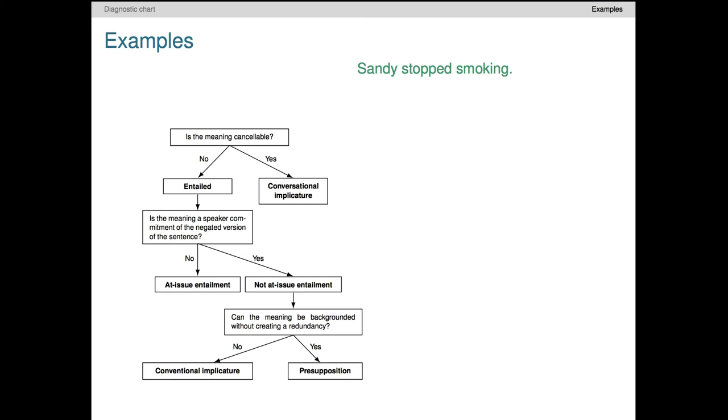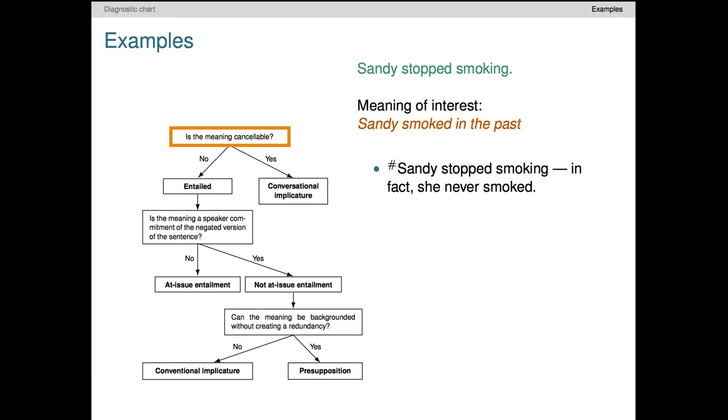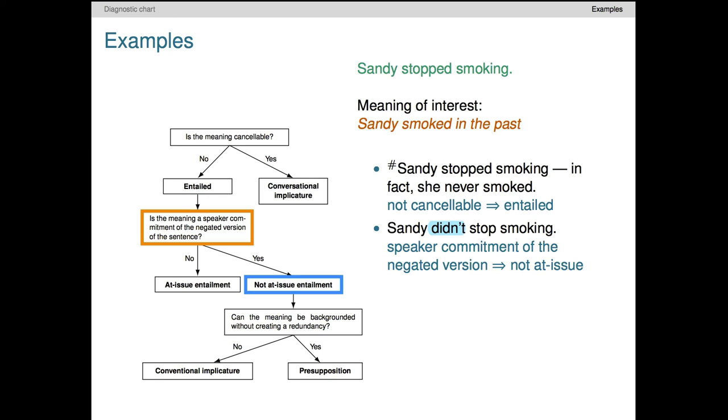Next, let's look at the sentence 'Sandy stopped smoking.' The meaning of interest is that Sandy smoked in the past. As always, we first try to express the negation of the target meaning, and the result sounds contradictory. So this isn't a conversational implicature. It must be some kind of entailment. This leads us to ask what happens under negation. So we negate the original sentence, and here the target meaning survives. The new sentence, 'Sandy didn't stop smoking,' seems to assume that Sandy smoked in the past and asserts something only about the present. The interrogative form has the same property. 'Did Sandy stop smoking' commits the speaker to Sandy having been a smoker in the past. It queries only the present state. So we move to the not at-issue branch.